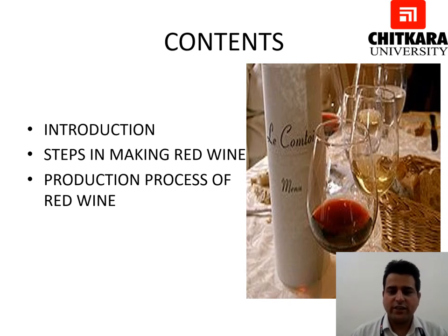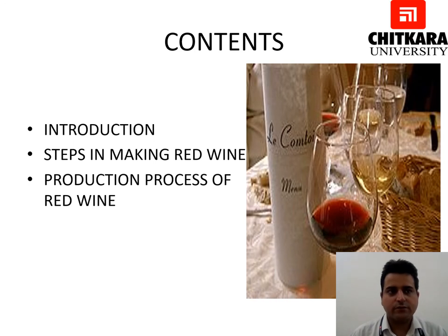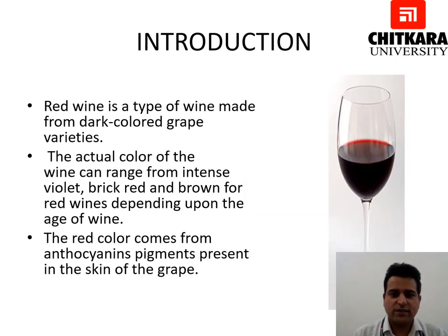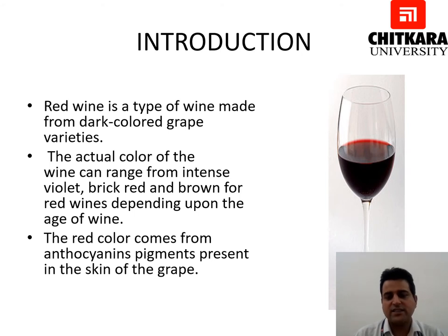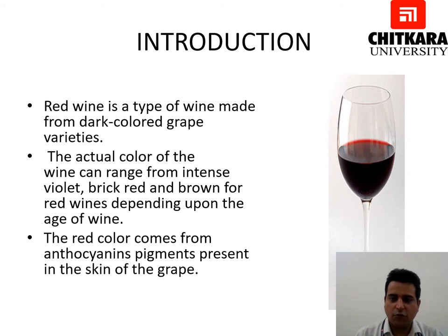In this photograph on the right you can see a red wine glass with a beautiful wine being served to a guest in a restaurant. Red wine is a type of wine made from dark colored grape varieties. The actual color of the wine can range from intense violet, brick, red, or brown depending upon the age of the wine. The red wine color comes from a pigment called anthocyanins present in the skin of the grapes.